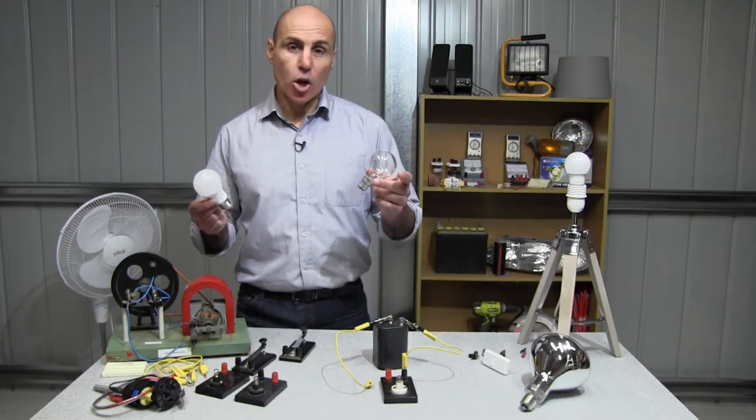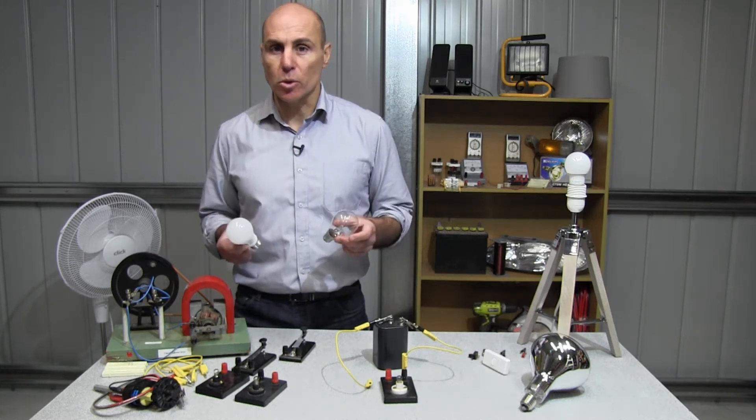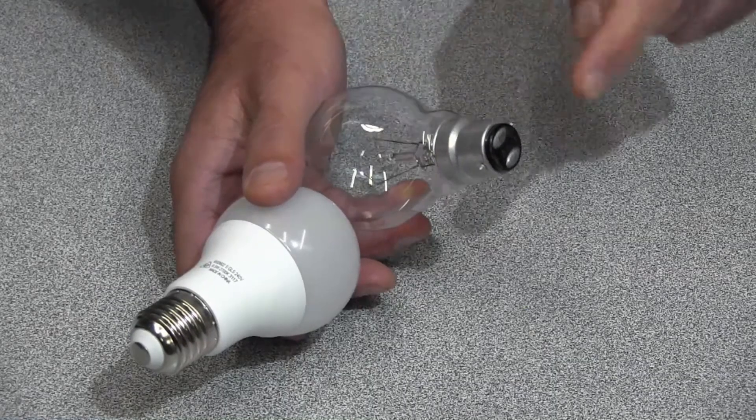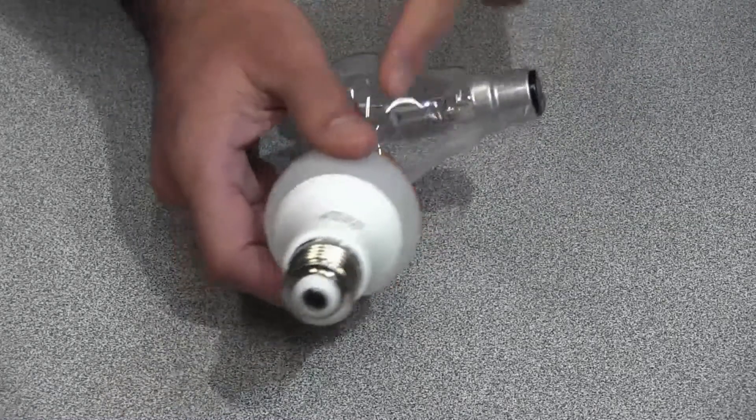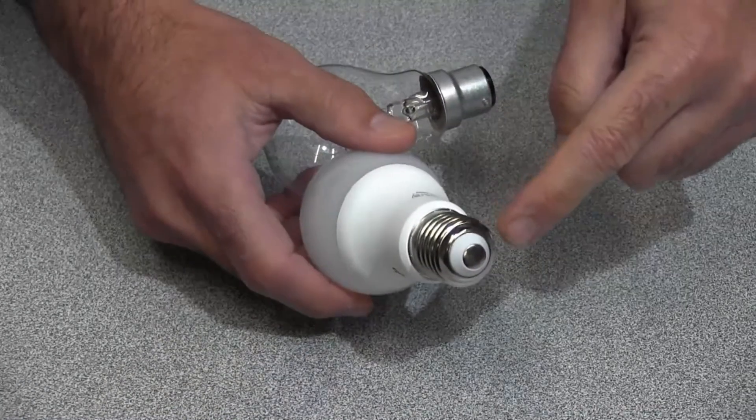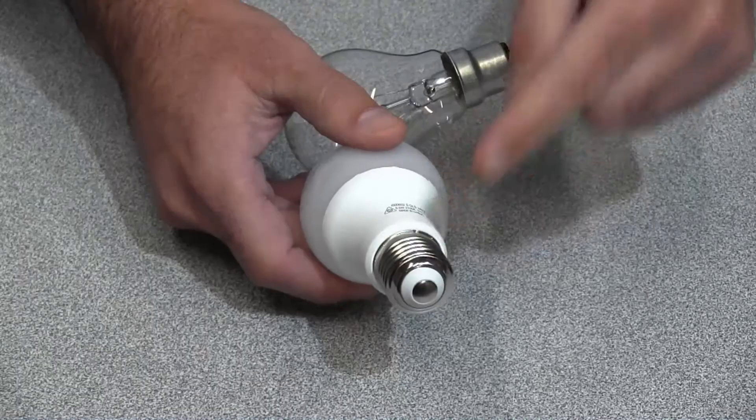Now all light globes have two connections, which are also called terminals. On this light globe, the two terminals are on the bottom, but on this light globe, one terminal is on the bottom, and the screw itself is the other terminal.